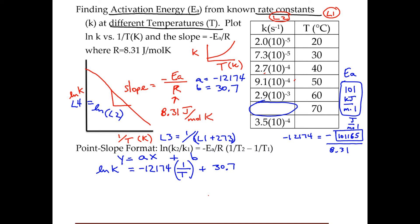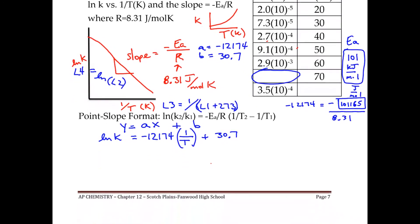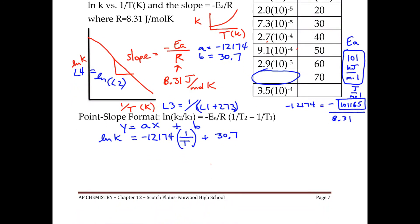So now what you need to do is you need to put in your data for each of these. So for the first example that we're looking for, we know that the temperature is 70 degrees. So for that one, we're going to do 70 plus 273 over here. And you're still going to have your negative 12,174. You're still going to have your 30.7. And that's going to equal the ln of K. And when you do all the math for this,